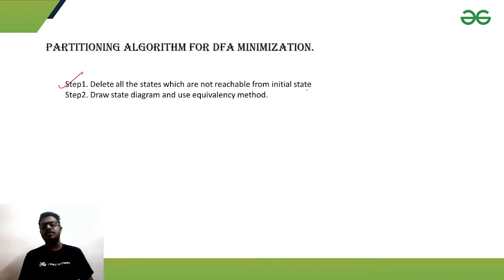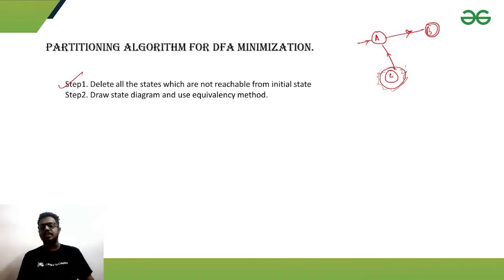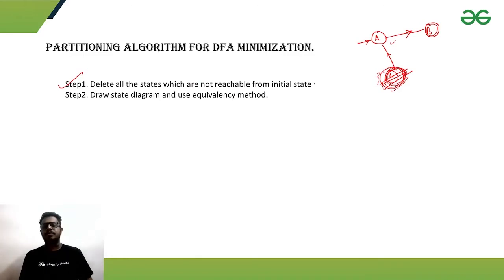Before using the partitioning algorithm, there is a prerequisite: in step one, we delete all states which are not reachable from the initial state. For example, suppose state A is the initial state and state B is the final state — we can reach the final state. But if there is another state C with no incoming path from the initial state, then state C is not reachable from state A and we discard it.